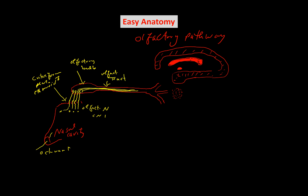The nerve fibers traveling through the olfactory tract come to an area called the olfactory trigone, because it looks like a triangle, where it splits into three directions: the lateral stria, the anterior stria, and the medial stria.